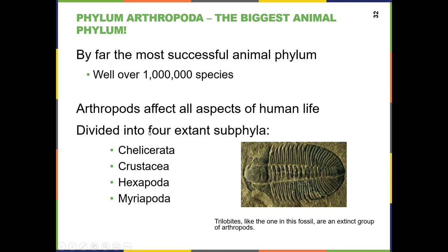The arthropods are divided into four major subphyla, and you need to know the names of these, with common name examples of animals in each subphylum: Chelicerata, Crustacea, Hexapoda, and Myriapoda.